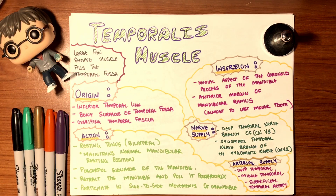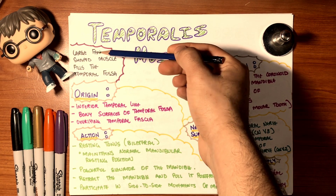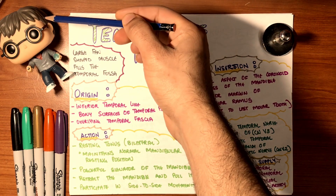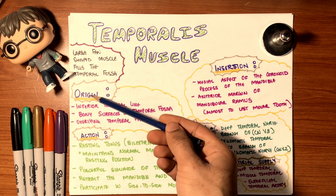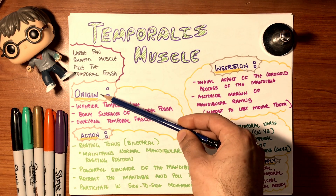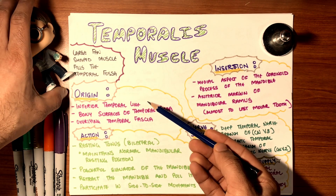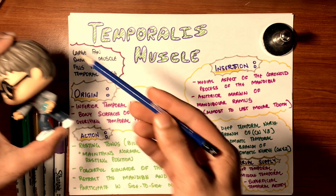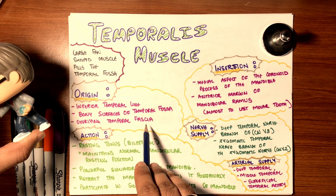The temporalis muscle is a large fan-shaped muscle that fills the temporal fossa. We're going to talk about its origin, insertion, action, and nerve supply. The origin of the temporalis muscle is the inferior temporal line, the bony surface of the temporal fossa, and the overlying temporal fascia.